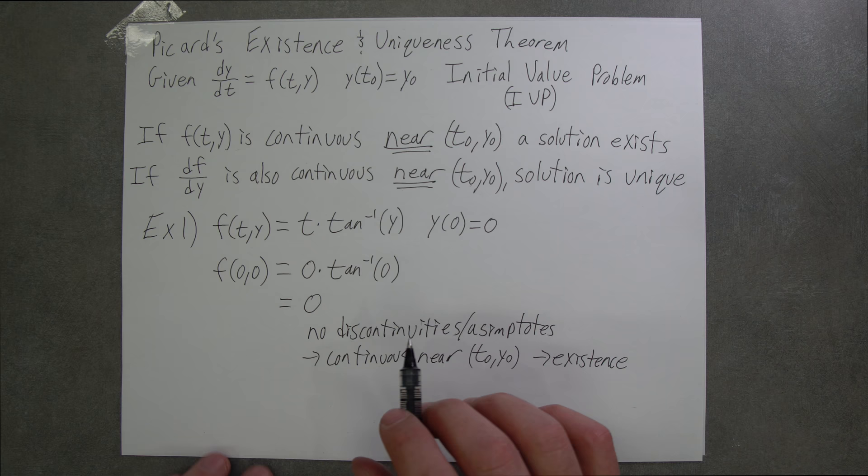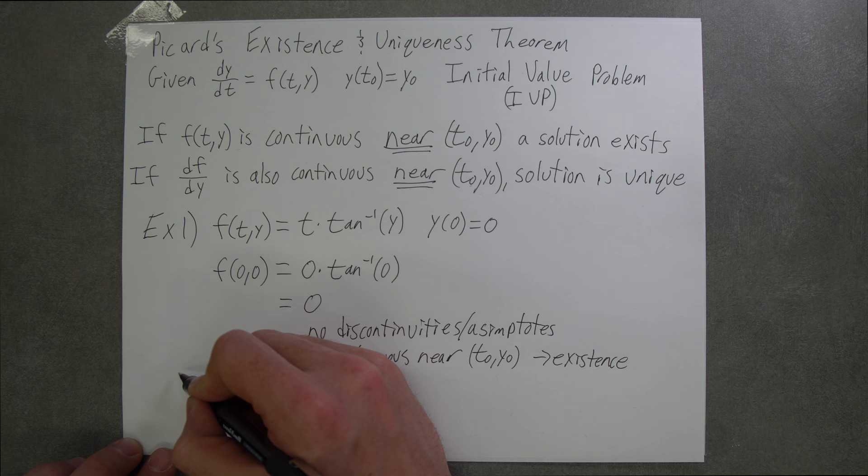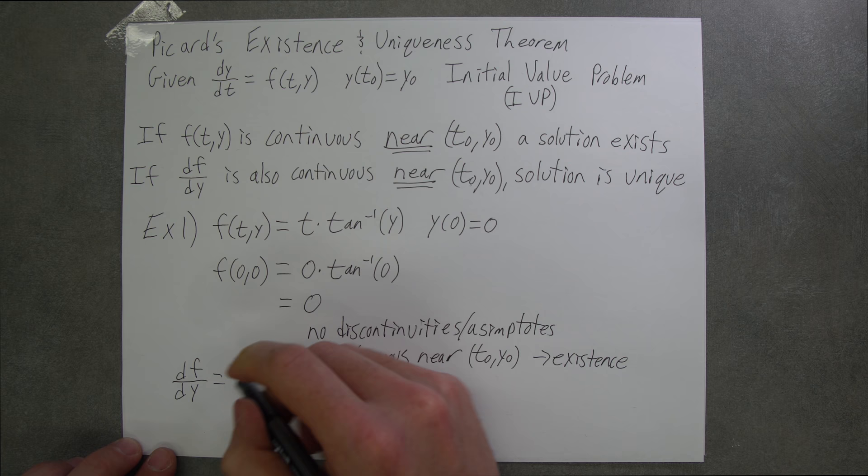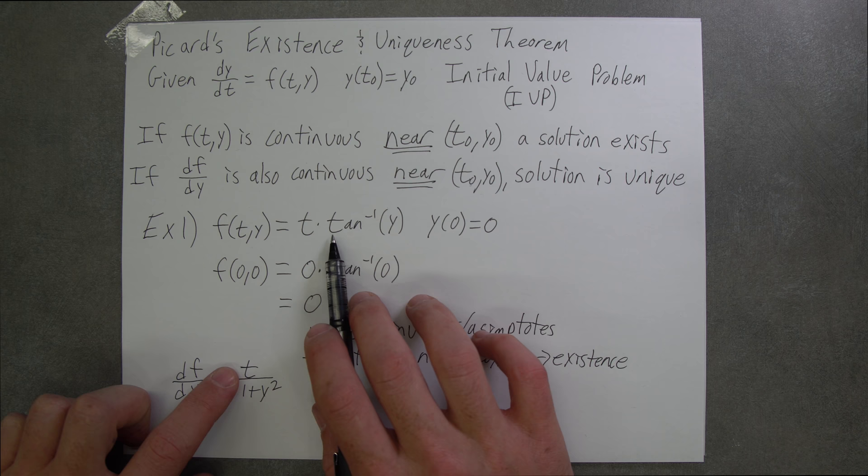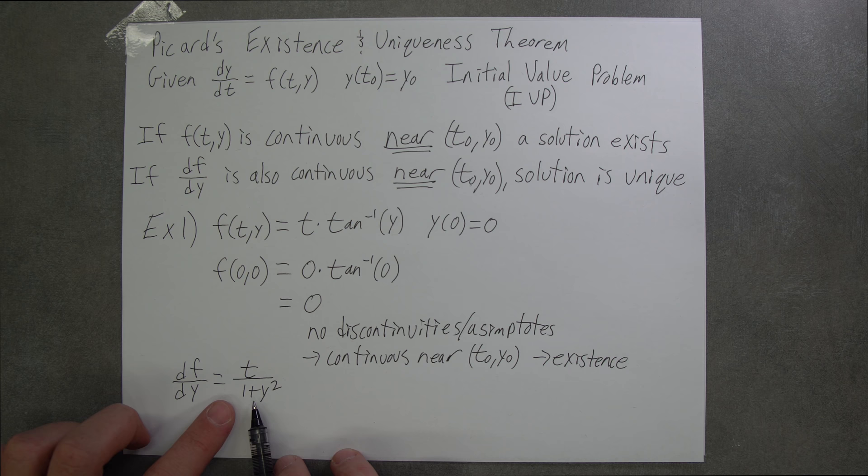This means that a solution exists for this initial value problem. Now let's see if it's unique. The way we do that is we write the partial derivative of f with respect to y equals t over 1 plus y squared. The way that we did this is by keeping t as a constant and taking the derivative of arctangent of y.